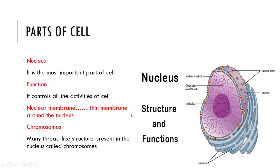Chromosomes: many thread-like structures present in the nucleus are called chromosomes. They are thread-like structures inside the nucleus. Chromosomes pass on the characteristics of the cell to the new cell. The number of chromosomes is fixed in every cell; a human cell has 46 chromosomes.